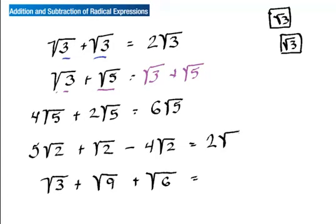On first glance it looks like I can't do anything here — I see a square root of three, can't do anything with that. But this square root of nine just happens to be three, so I can simplify it, though I still can't combine it with that other term. Then the square root of six — does it have a perfect number inside? Nope, so that's as low as it goes, it's simplified, and I can't add anything there.